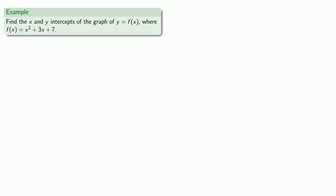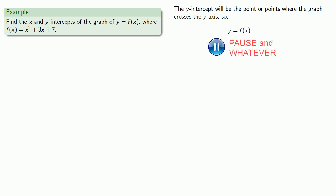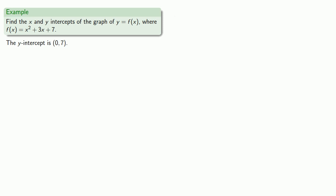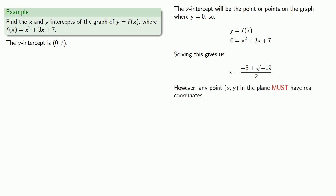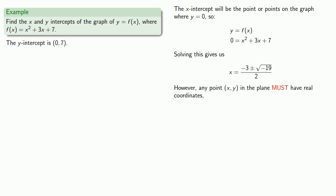What about the x and y intercepts of the graph of this function? The y-intercept will be the point or points where the graph crosses the y-axis. Equals means replaceable, and so the y-intercept is (0, 7). How about the x-intercepts? The x-intercepts will be the point or points on the graph where y is equal to zero. So replacing and solving — while we do have a solution, any point (x, y) in the plane must have real coordinates. Since the solutions to this equation do not give us real coordinates, there is no point where the graph crosses the x-axis. There are no x-intercepts.